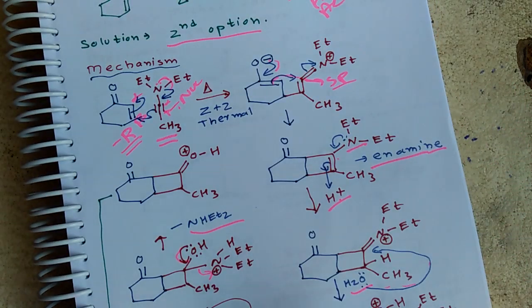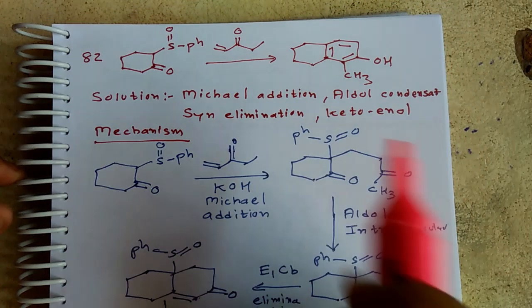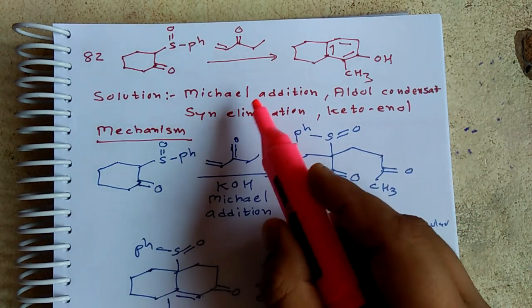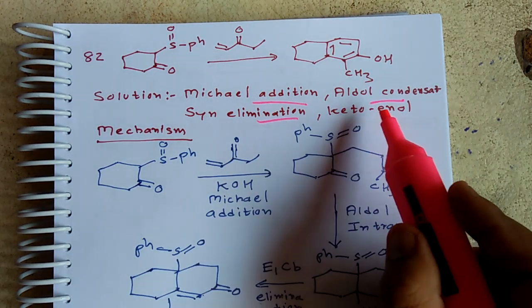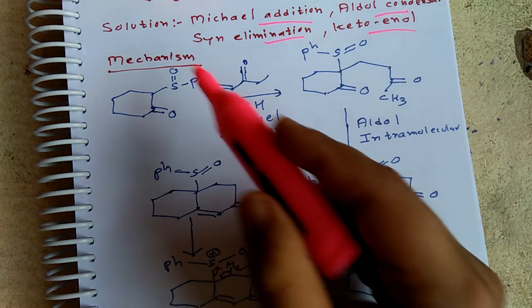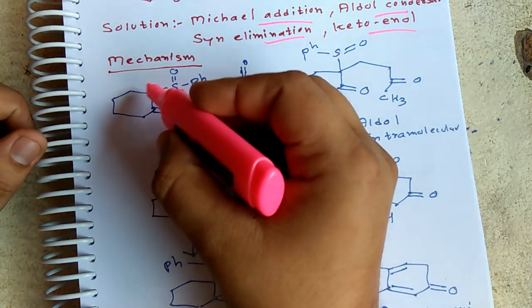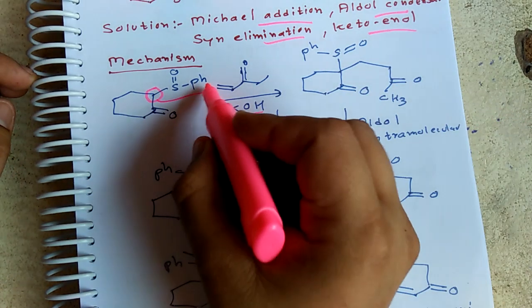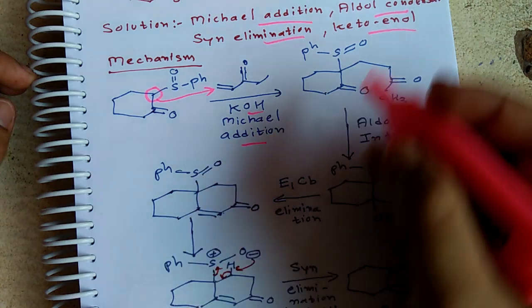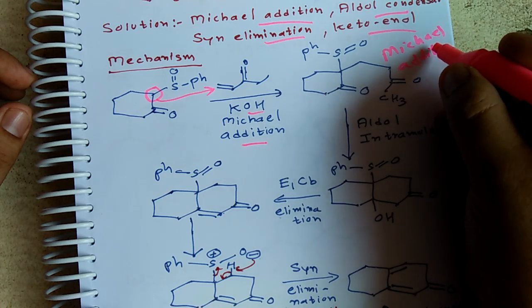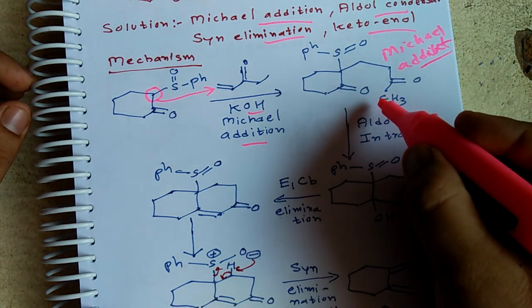The next question is also very conceptual. They have given the starting material, reagent, and product, and asked the sequence of reactions. The right answer is Michael addition. KH is used, and the most acidic proton is here — it will get removed and attack the Michael acceptor. This is simple Michael addition, and the product is known as the Michael adduct.